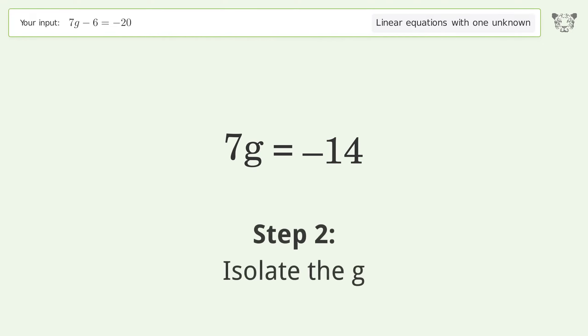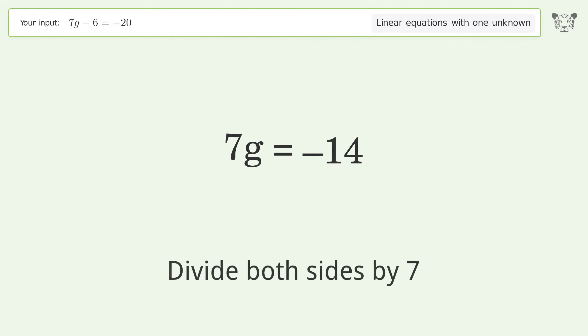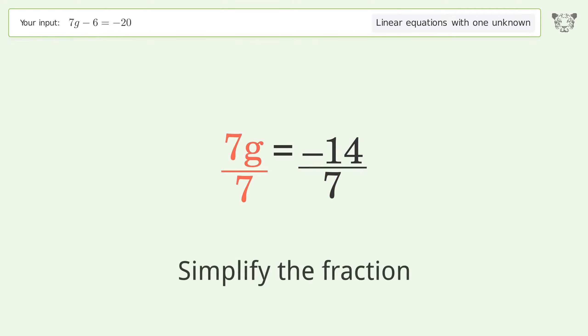Isolate the g. Divide both sides by 7. Simplify the fraction.